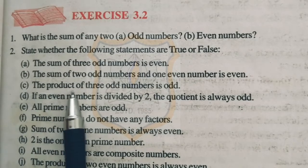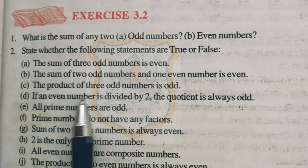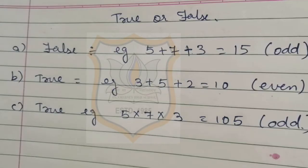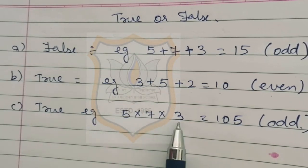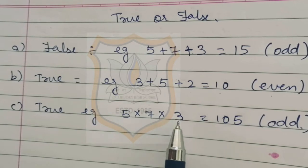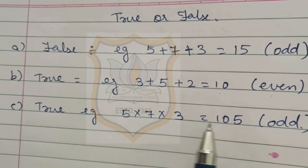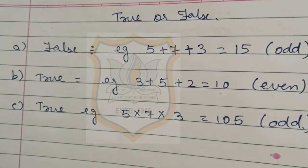Part C: the product of three odd numbers is odd. Here product means multiply — if we multiply any three odd numbers, we get an odd number. The statement is true. For example, multiplying 5, 7, and 3: 5 times 7 is 35, and 35 times 3 is 105, which is an odd number. So the statement is true.